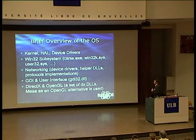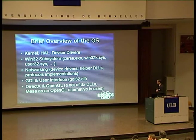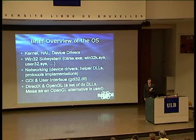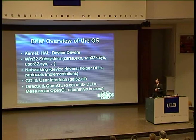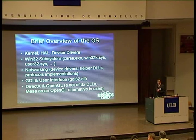Let's see what the kernel consists of. Actually, the kernel consists of a few files: the kernel itself, the hardware abstraction layer, and device drivers. We also have to provide some components to the system which are needed for it. This is the Win32 subsystem, which provides the application program interface for Windows applications. Then we provide networking drivers and a complete networking stack, GDI user interface, and DirectX and OpenGL libraries for graphics support.